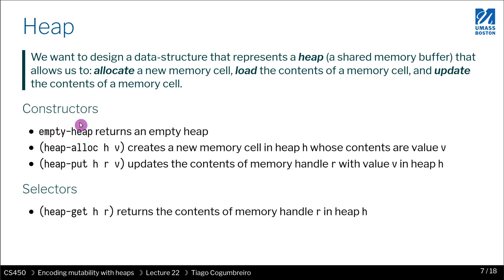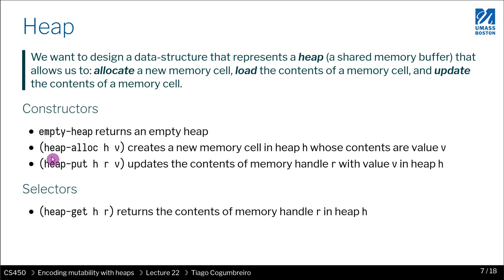So we're going to have constructors and selectors. We're going to have an empty heap to represent an empty heap — we use this constant to represent it. Then we're going to have two more constructors. The first one creates a new allocation, basically the equivalent of C's malloc. And then we're going to have something that updates a heap: given an already existing reference, you might want to update a value that is at that reference.